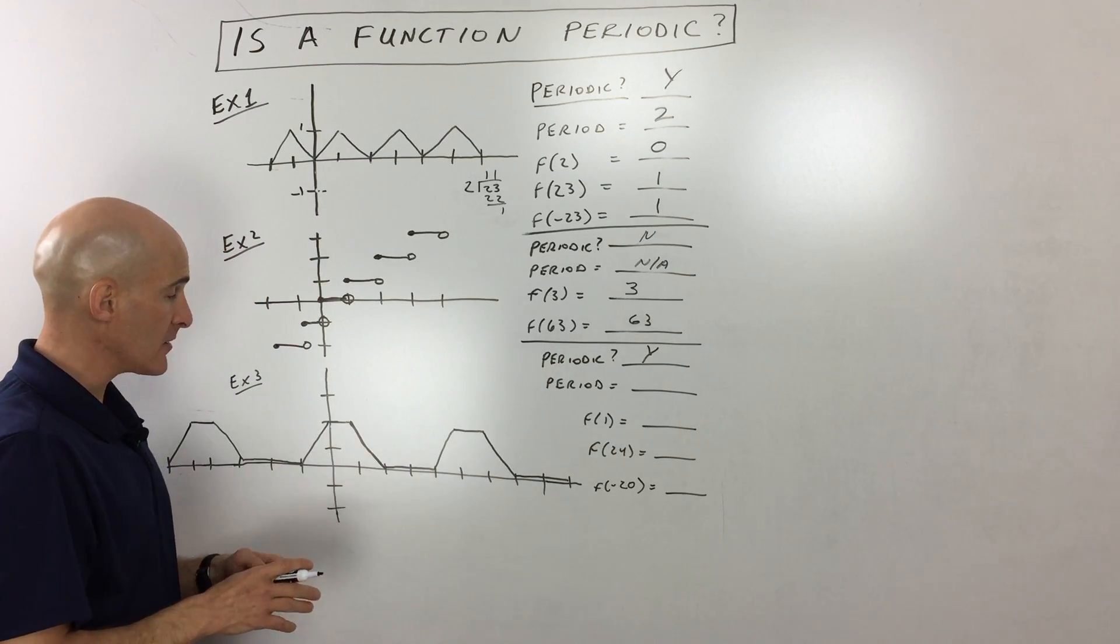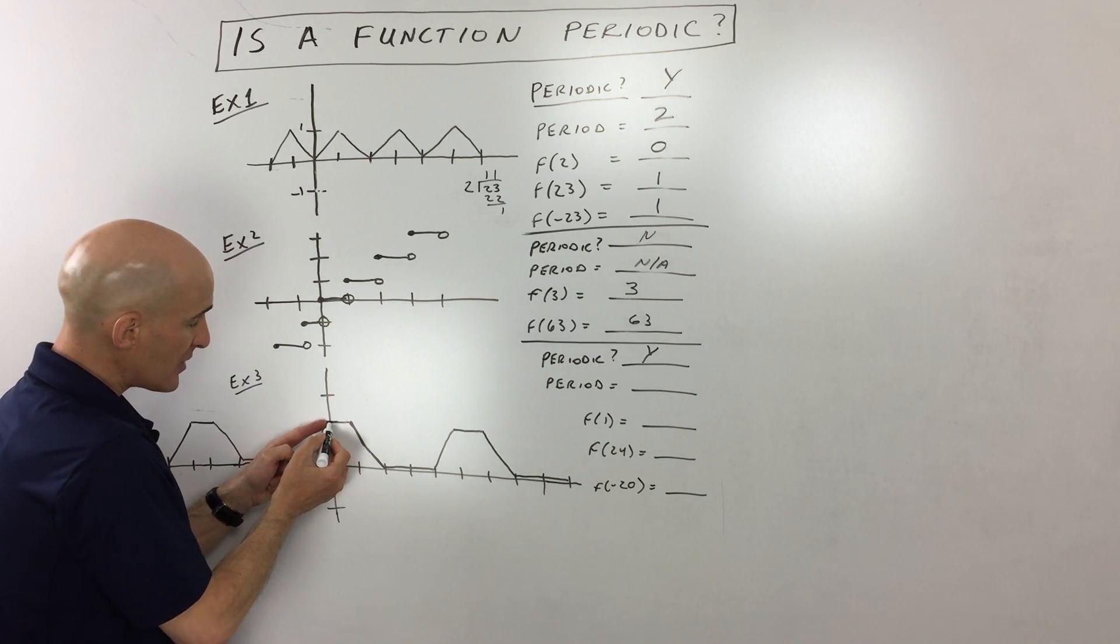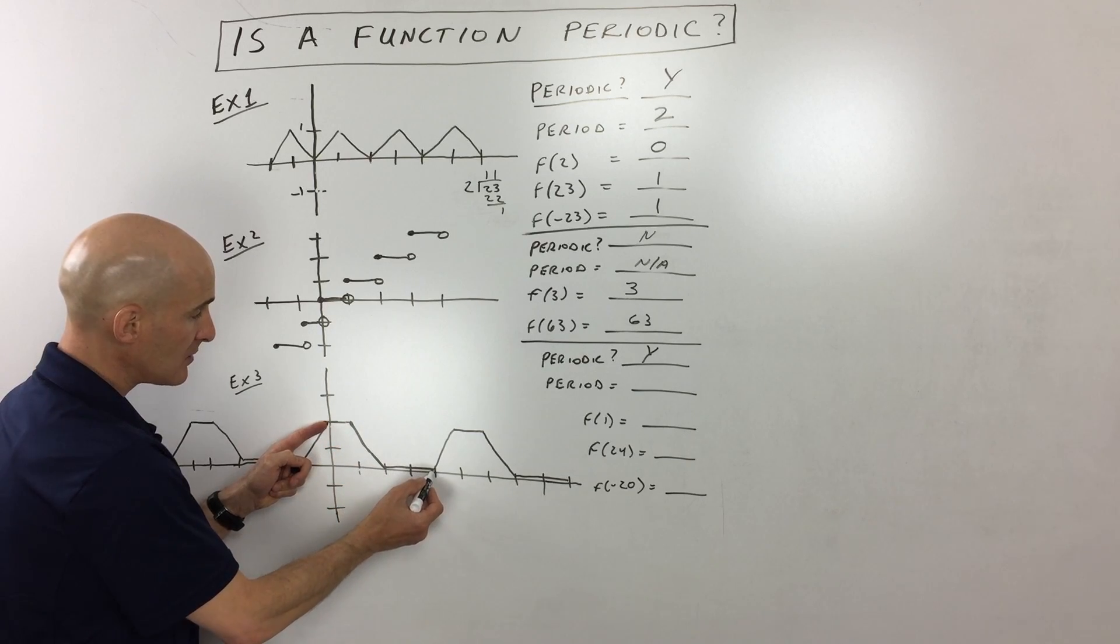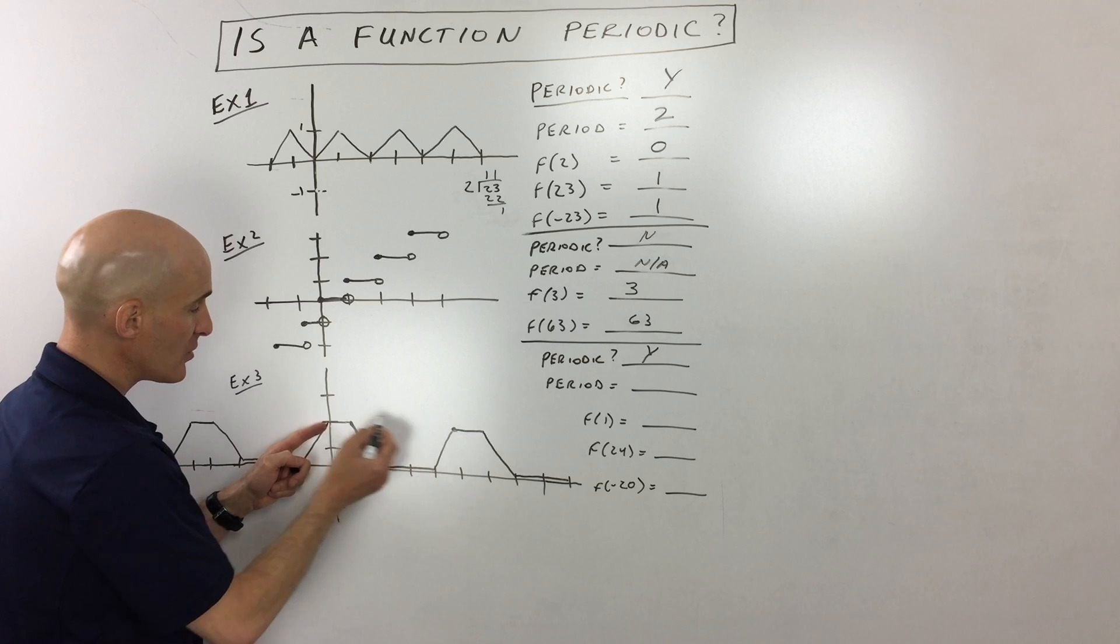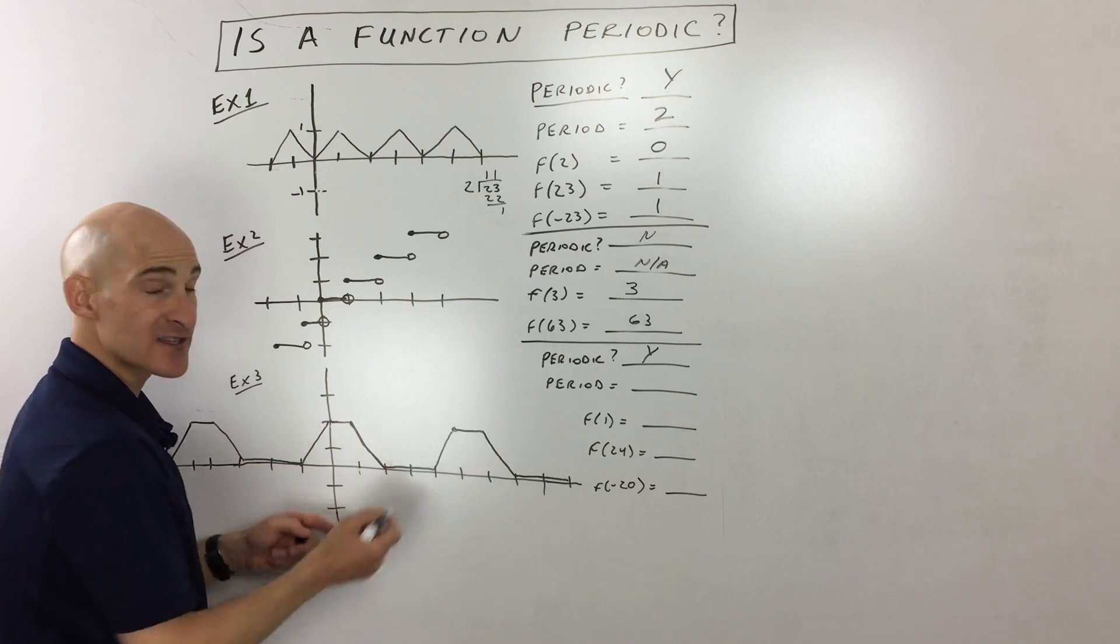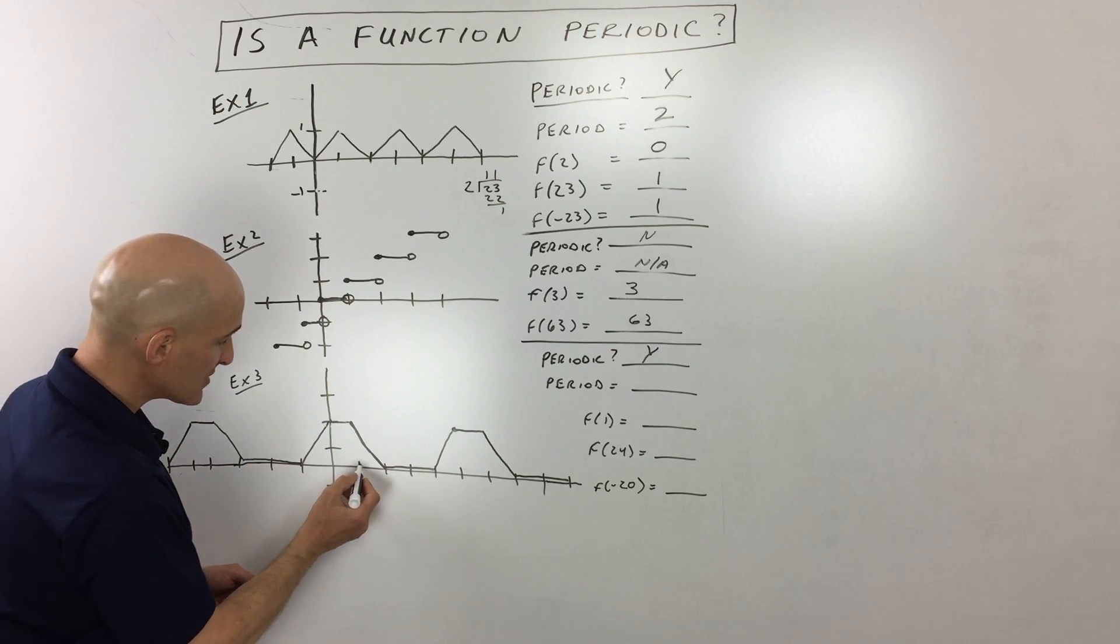Now the question is, what is the period? Well, let's see. So if we start here, we're going to the right, down, to the right, up. So from here to here, you can see that's one cycle and then it starts over again. So how many units is that?